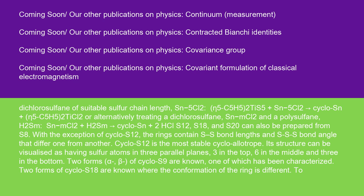With the exception of cyclo-S12, the rings contain S-S bond lengths and SSS bond angles that differ one from another. Cyclo-S12 is the most stable cycloallotrope. Its structure can be visualized as having sulfur atoms in three parallel planes: three in the top, six in the middle, and three in the bottom. Two forms, alpha′ and beta, of cyclo-S9 are known, one of which has been characterized.